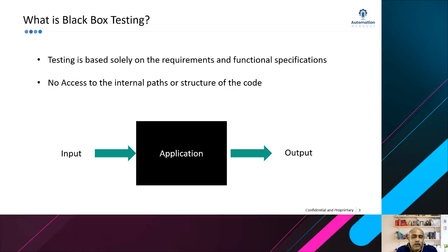You don't know how the developer has implemented it — that's a black box for you, which is why it's called black box testing. You don't have access to the code structure or the internal parts of the code. You're doing your testing based on the requirements and functional specifications. You basically have inputs going into an application, and you know what kind of processing might happen within it — the logic embedded in the application — but you don't know how it is implemented.